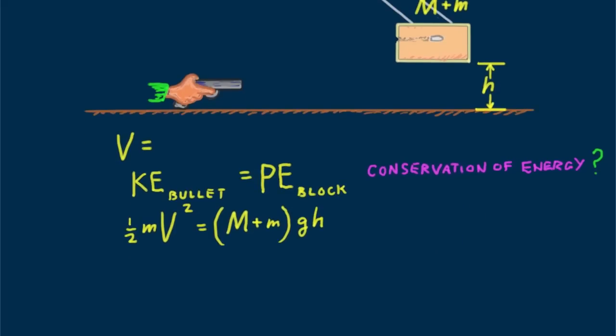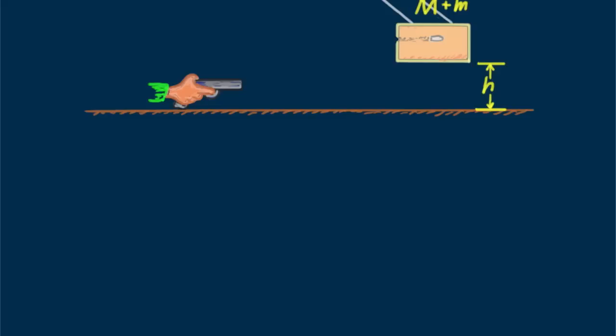So our energy equation would be kinetic energy of the bullet equals heating of the block plus the potential energy of the block. We don't have information that deals with the heat generated. That being the case, we move to the conservation of momentum.